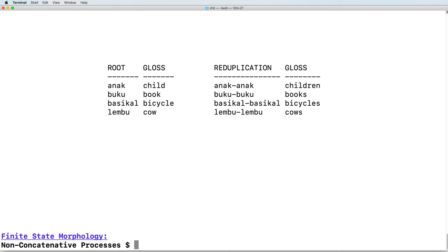On the right, we see that these can be reduplicated to form the plural. The forms on the left—anak, buku, and so on—are underspecified with respect to number. The forms on the right are explicitly plural, referring to children, books, bicycles, and cows.